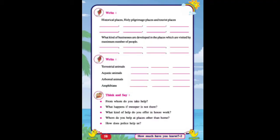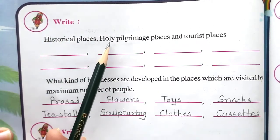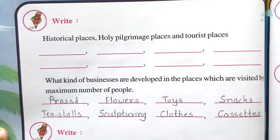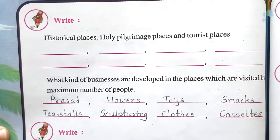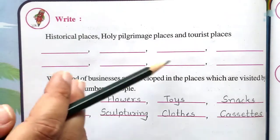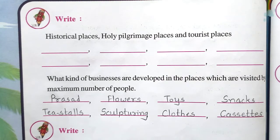Now turn the page. See on page number 58. Write the historical places, holy pilgrimage places, and tourist places of your district. You need to write the names of historical places, holy pilgrimage places, and tourist places of your district. I have written some for you ahead, so you can write the rest by yourself.